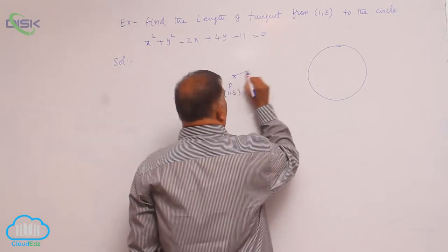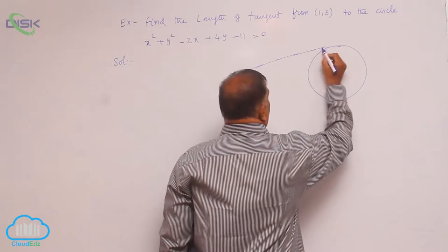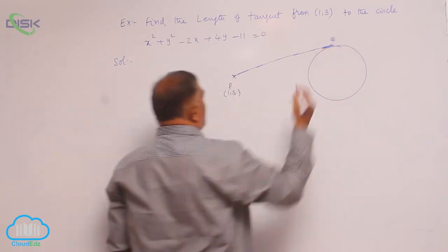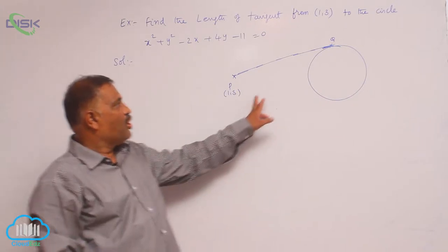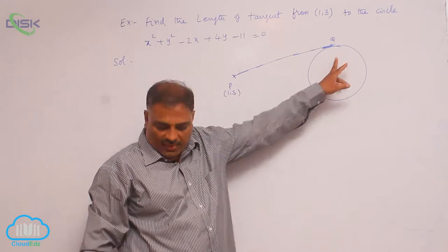Now as I told you, the length of tangent is nothing but the distance between the point P to the point where it touches the circle equation.